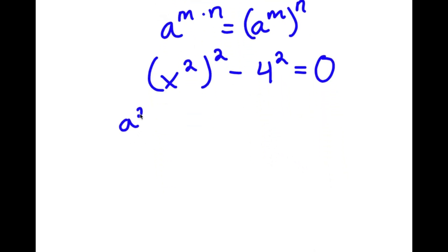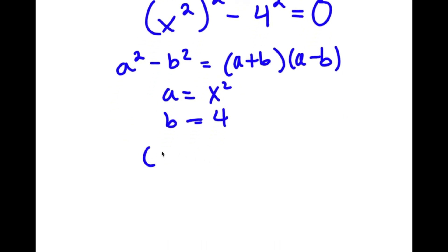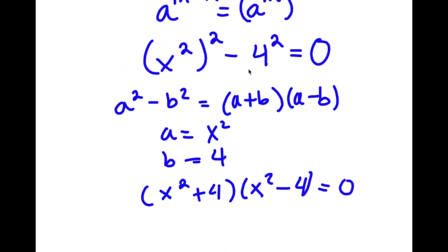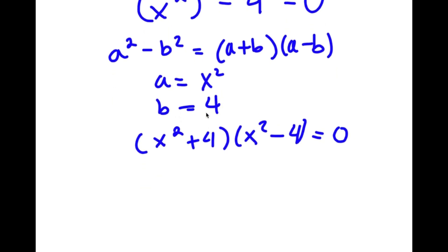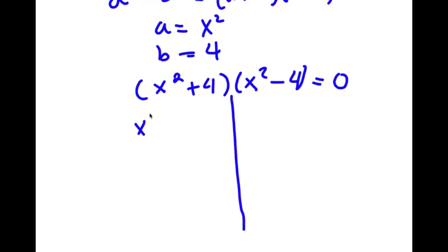Using the difference of squares property — a squared minus b squared equals a plus b times a minus b — where a is x squared and b is 4, I get x squared plus 4 times x squared minus 4 equals 0. This gives me two equations: x squared plus 4 equals 0, and x squared minus 4 equals 0.